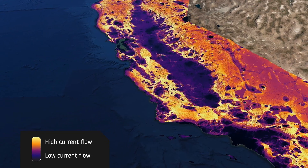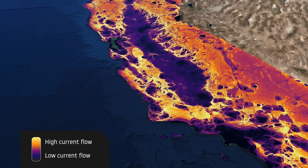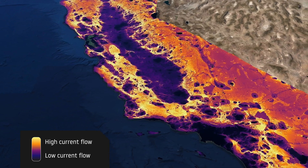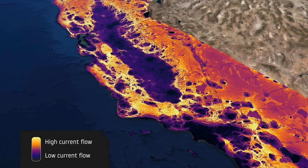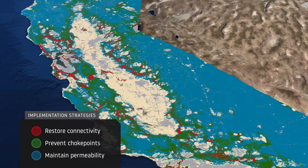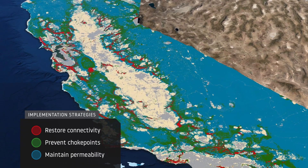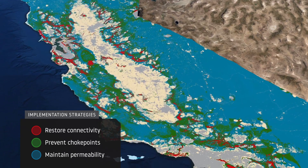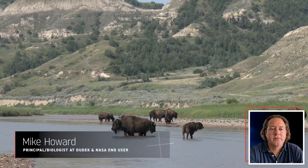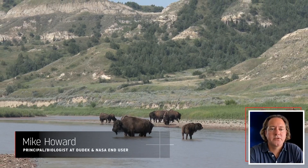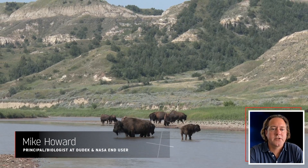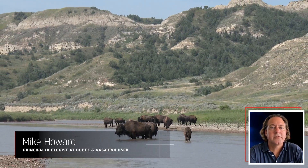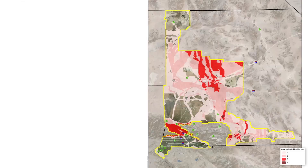Running our models with NASA's data allows us to compare patterns across space and over time so that decision makers can more effectively target conservation actions. Circuitscape and the products derived from it are essential for the conservation of wildlife dependent on movement and connectivity for survival.